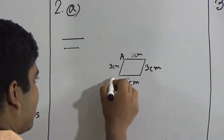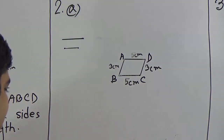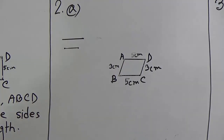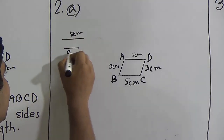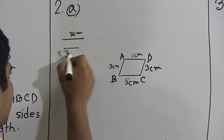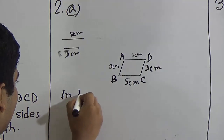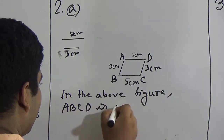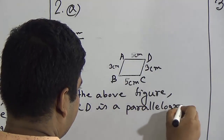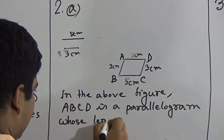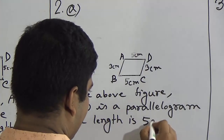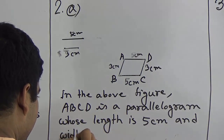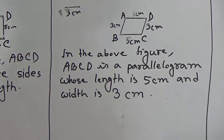Now I give the vertices names: A, B, C, D. The figure shows 5 centimeter on the longer sides and 3 centimeter on the shorter sides. I use centimeter as unit, so the figure looks small, but in your exercise copy it will appear larger. In the above figure, ABCD is a parallelogram whose length is 5 centimeter and width is 3 centimeter. I hope you have understood.